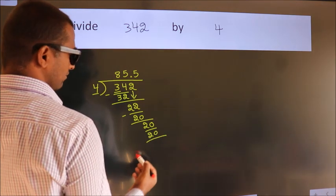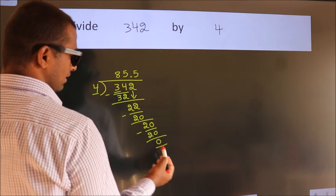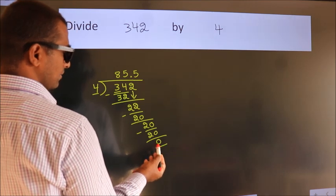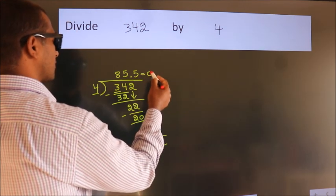Now we subtract and get 0. We got remainder 0, so this is our quotient.